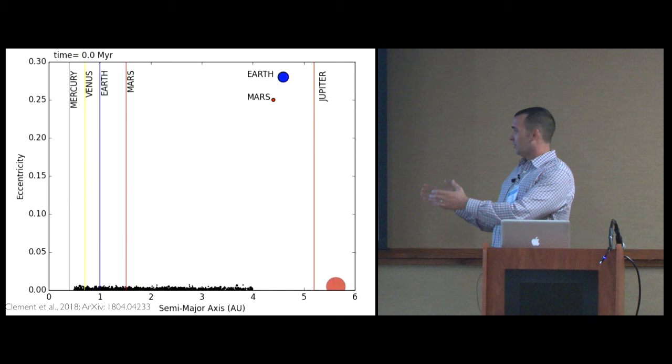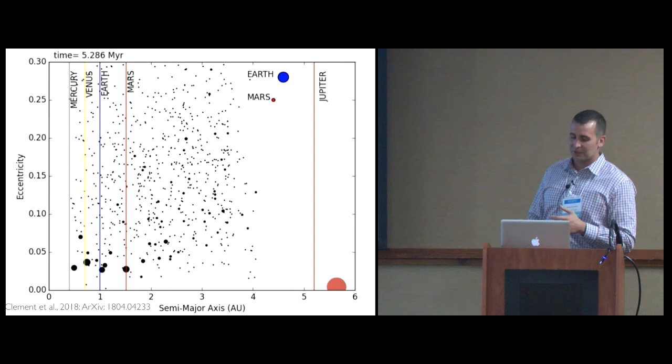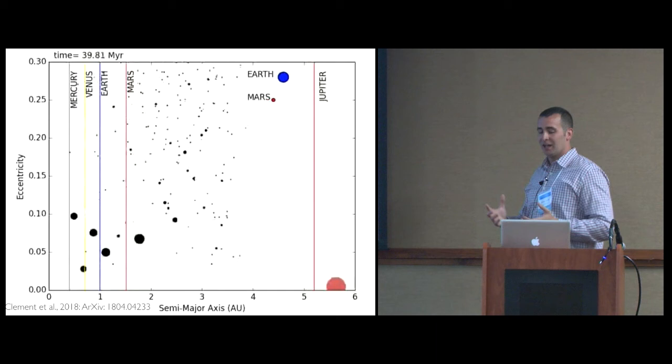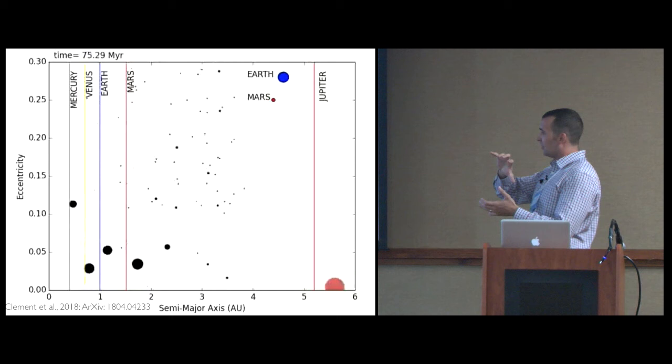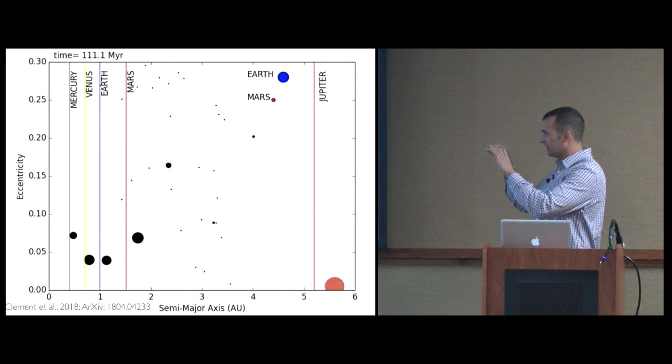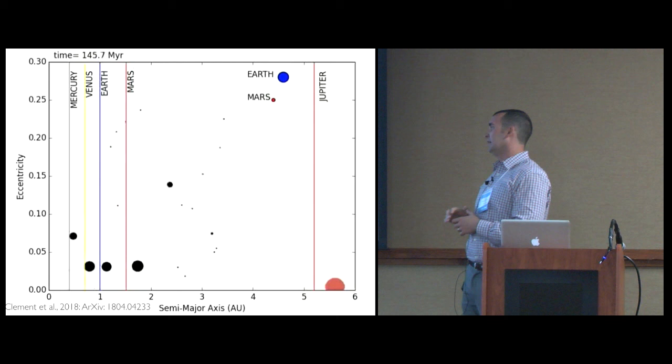So here's an example of a simulation which is performed using what we call the standard initial conditions. This basically just assumes a uniform distribution of material. You get the mass of material from the minimum mass solar nebula. We can also look at protostellar disks and how the mass distribution profile goes. We just lay down these planetesimals and embryos and see what happens.